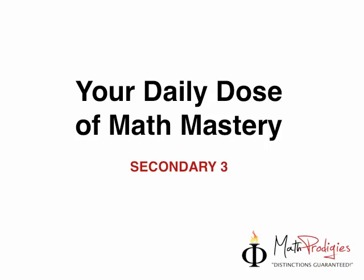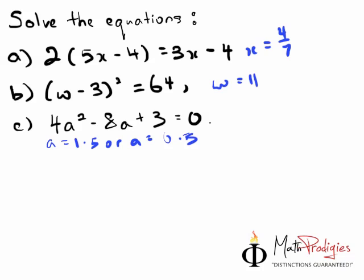What we're going to do right now is, oh yeah, yesterday's question was actually pretty easy. Let's take a look at yesterday's questions. It was this, and the answers are to your right. X equals 4 over 7, W equals 11, and A equals 1.5 or A equals 0.5. And if you got all of them right, high five, you are a math prodigy. Good job.